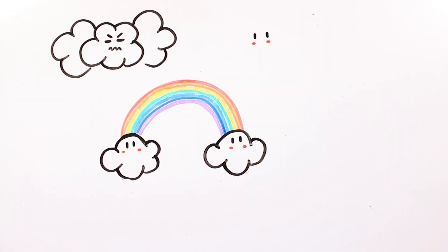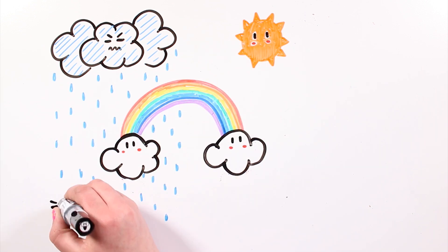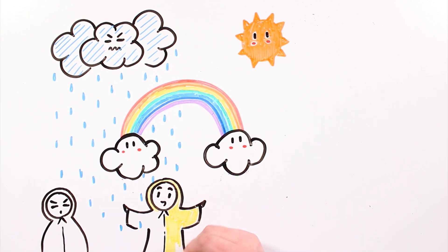If we want to see a rainbow, there needs to be rain and sun at the same time, but also, we need to be in between the rain and the sun.